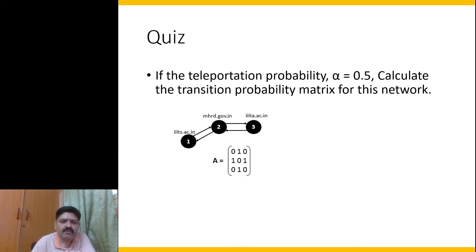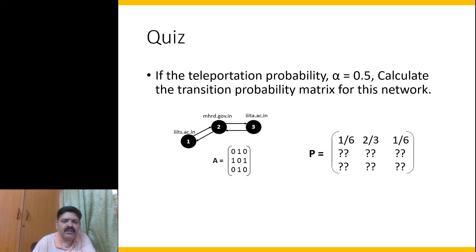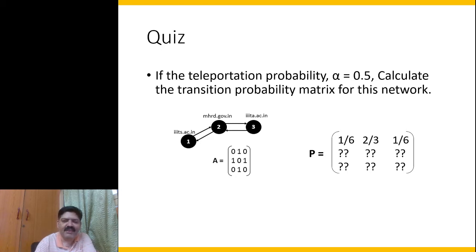Let's say alpha is 0.5. Calculate the transition probability matrix for this network — please pause the video and work it out for yourself. The first row should give 1/6, 2/3, and 1/6. Since alpha is 1/2, alpha/3 is 1/6 — that's the teleportation probability to each node. Node two can be reached either by teleportation (1/6) or by following the link (1 minus alpha = 1/2), giving 1/2 + 1/6 = 2/3.